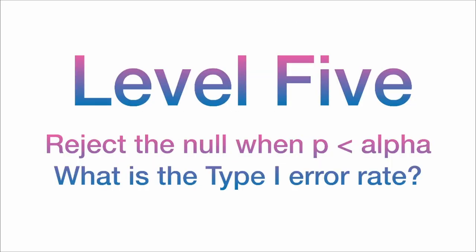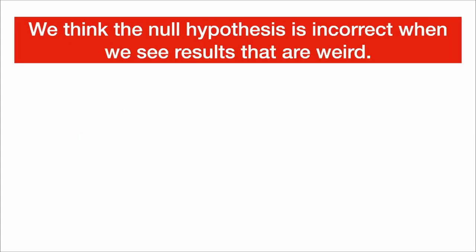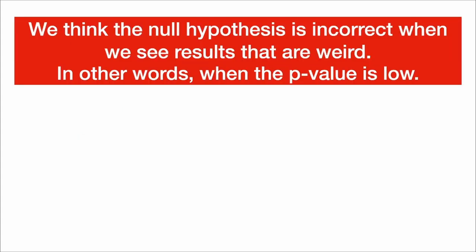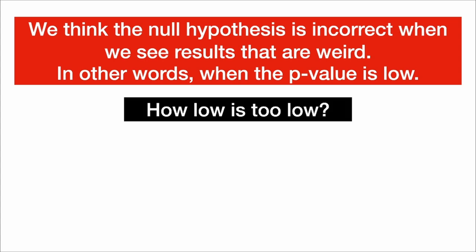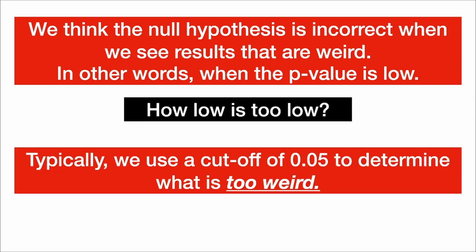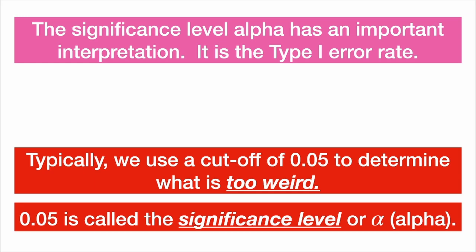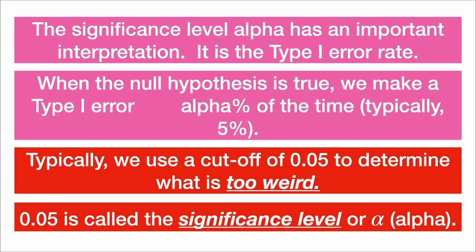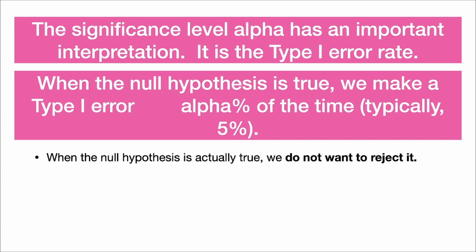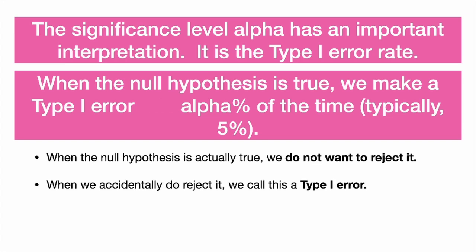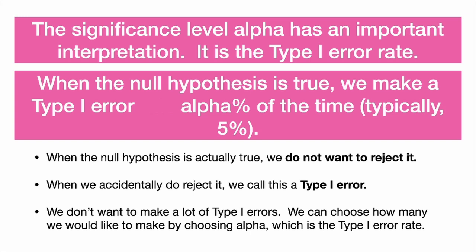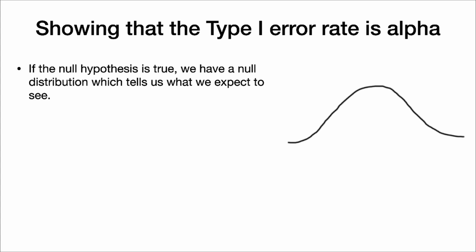Level 5: reject the null when p is less than alpha. What is a type 1 error rate? We think the null hypothesis is incorrect when we see results that are weird — when the p-value is low. Typically we use a cutoff of 0.05, called the significance level or alpha. Alpha is the type 1 error rate: when the null hypothesis is true, we make a type 1 error alpha percent of the time, typically 5%. When the null hypothesis is true, we don't want to reject it, but when we accidentally do, we call this a type 1 error. We choose how many we'd like to make by choosing alpha.